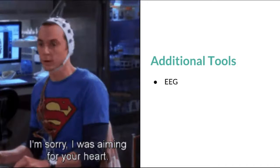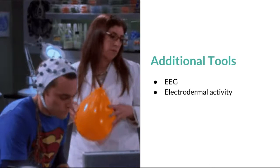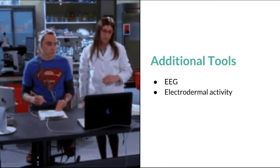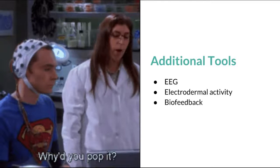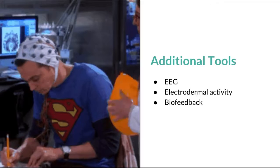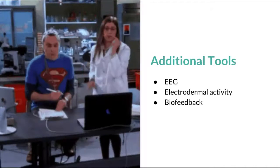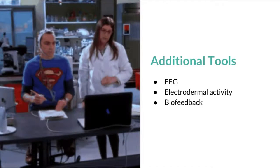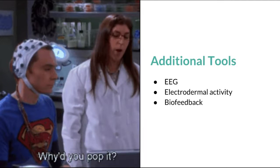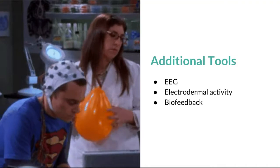Now, have you ever had sweaty palms when you were nervous? Electrodermal activity can measure your sweat response and reaction to emotional states. Biofeedback uses both EEG and electrodermal activity to help people learn to control body functions that are typically outside of conscious awareness. Biofeedback is often used for relaxation and pain reduction. In this case, Sheldon may benefit from biofeedback in reducing his anxiety in the lab.